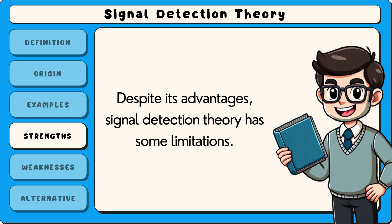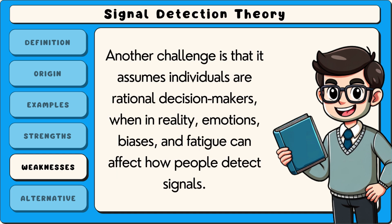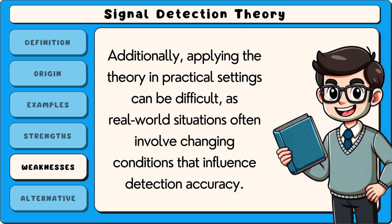Despite its advantages, signal detection theory has some limitations. One weakness is that it relies on mathematical models, which may not always capture the complexity of human perception and behaviour. Another challenge is that it assumes individuals are rational decision-makers, when in reality emotions, biases and fatigue can affect how people detect signals. Additionally, applying the theory in practical settings can be difficult, as real-world situations often involve changing conditions that influence detection accuracy.